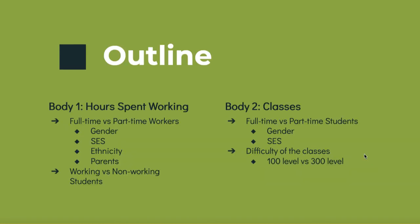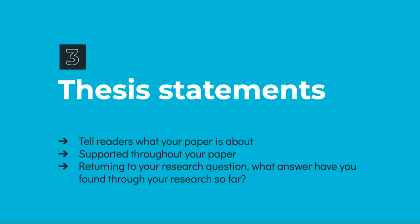You can also take your outline a step further by breaking each theme into subsections. In this example, not only can I compare part-time working students with full-time working students, but I can also look at differences by gender, socioeconomic status, and whether they're parents or not. Similarly, I can compare demographic characteristics for students going to school part-time and full-time. Next, let's work on the thesis statement.